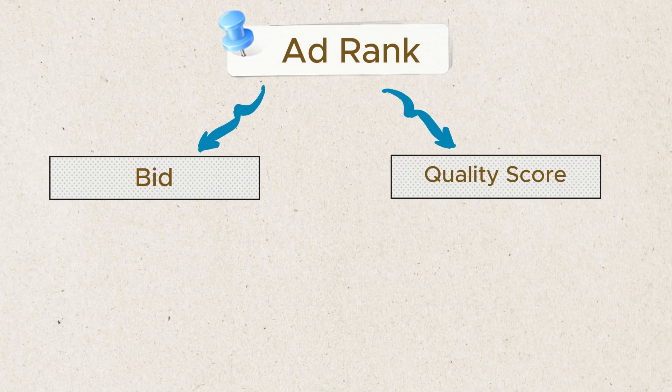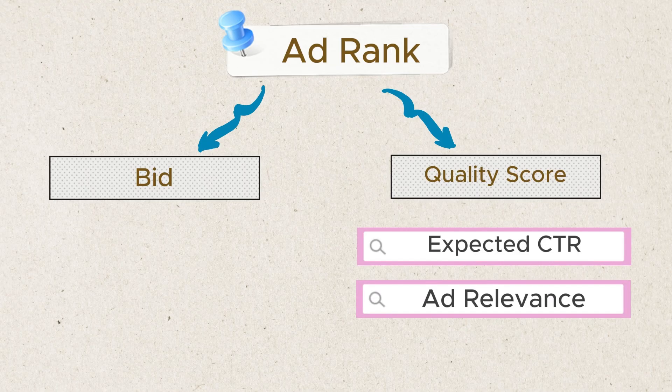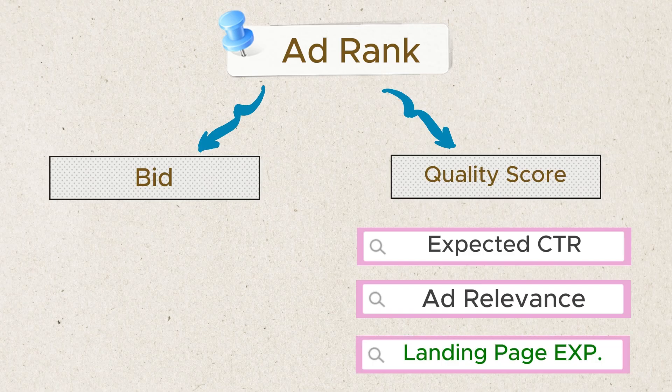Google has a metric called Ad Rank, which determines the rank of your ad — one, two, three, or lower on the page. This depends on two factors: your bid and your Quality Score. Either you increase the bid to improve your rank, or you maintain a good Quality Score. Quality Score in turn depends on three factors: expected CTR, ad relevance, and landing page experience.